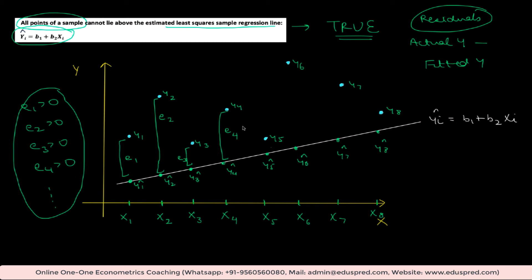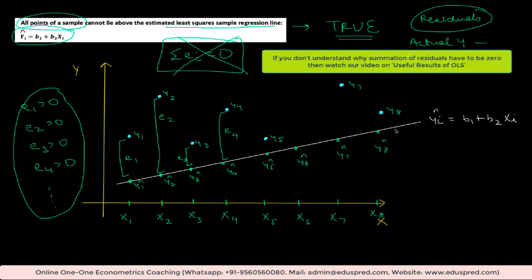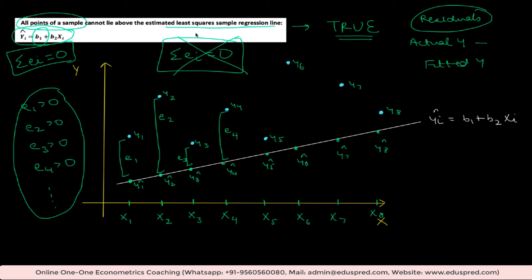If all residuals are positive, can the summation of residuals equal zero? This cannot happen. And this is one of the algebraic properties of OLS: if you fit a line using OLS and your model has an intercept term — which we do have here — then the summation of the residuals must equal zero. That means some residuals must be positive and some must be negative so that their sum equals zero. In this scenario, all residuals are positive, so the sum can never be zero, which means you cannot fit a line like this using OLS.